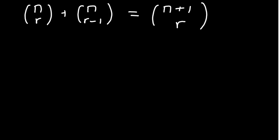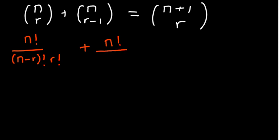I'll try to be real so that you understand how you'd go about it if you find it in an exam on your own. For the first part, we already know what that means: n factorial over n minus r factorial, and then r factorial, plus n factorial over r minus 1 factorial.